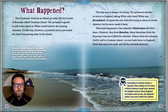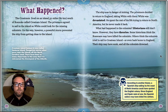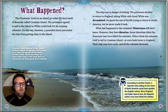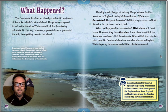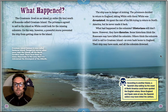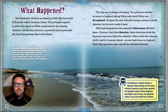The Croatoans lived on an island 50 miles south of Roanoke called Croatoan Island. The privateers agreed to sail there so White could look for the missing colonists. On the way, however, a powerful storm prevented the ship from getting close to land — the ship was in danger of sinking. The privateers decided to return to England, taking White with them. White was devastated. He spent the rest of his life trying to return to North America, but he never made it back.